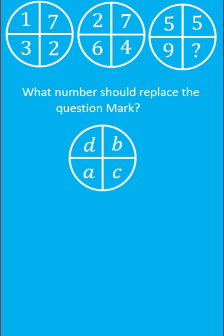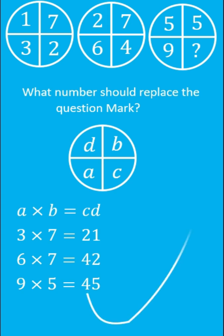A little intuition shows that cd is in fact a composite number and can be constructed from the multiplication of numbers a and b. On this basis: 3 times 7 equals 21, 6 times 7 equals 42, 9 times 5 equals 45. Therefore, 4 should replace the question mark.